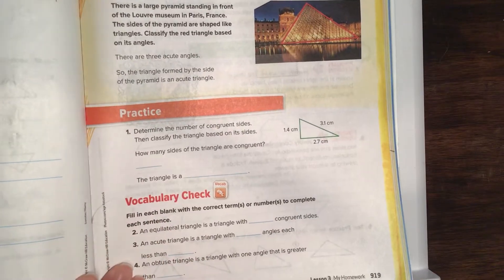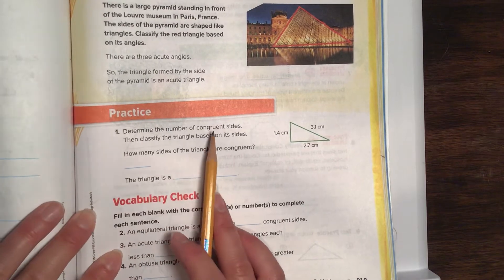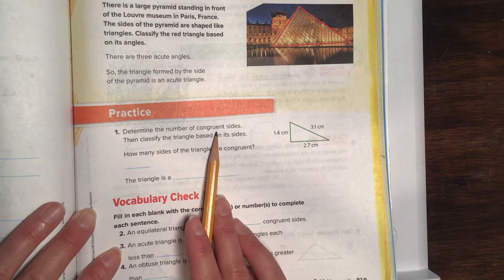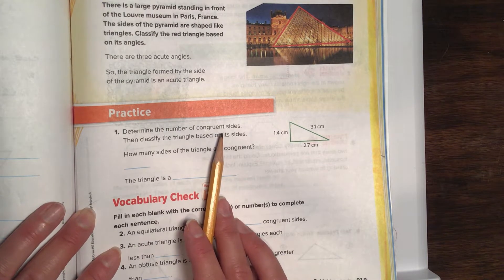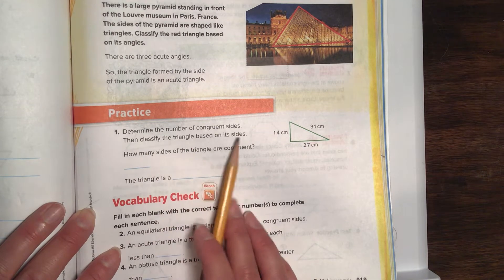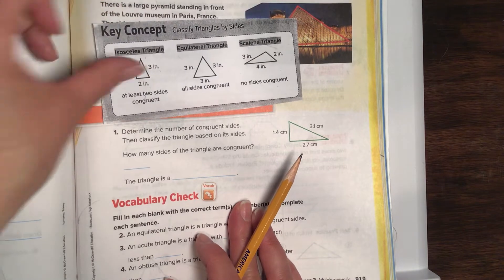Do whatever is best for you and works well for you. Determine the number of congruent sides. And remember congruent means same length. There might be a test question sometime about what the term congruent means. Then classify the triangles by its sides. So if we're gonna classify it by its sides, we're gonna pull that out to help us out.